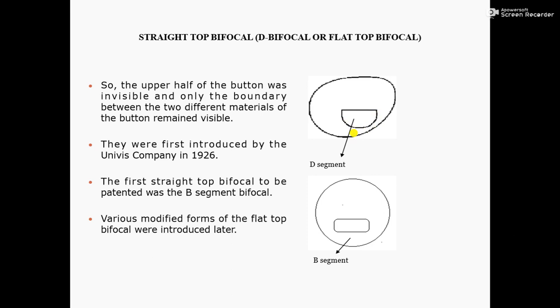They were first introduced by the Univis Company in 1926. The first straight top bifocal to be patented was the B segment bifocal. See the diagram - this one, this one, this one - B segment diagram.